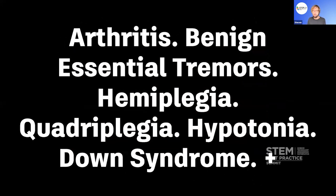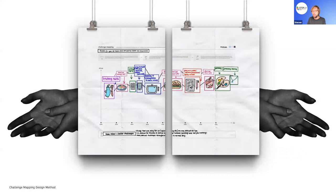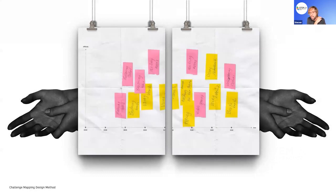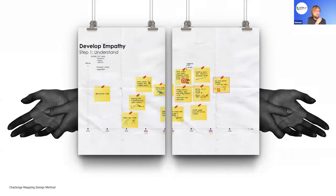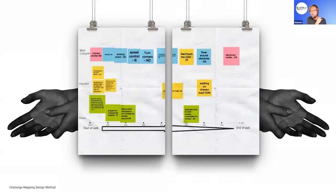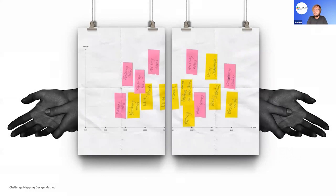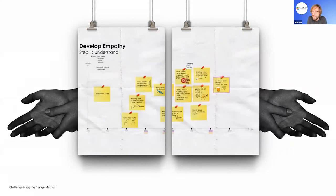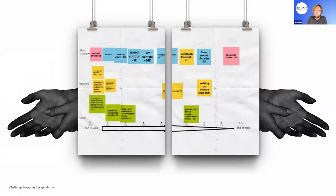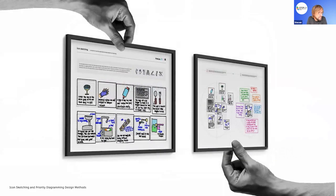Here's the first example: challenge mapping design methods where effectively students use the tools to watch the user in a time frame and map their day to identify challenges. In doing so, they can identify innovation. From this, the students then go into something we call icon sketching. The resources are all available for this for you to be able to use.